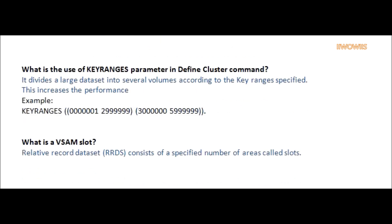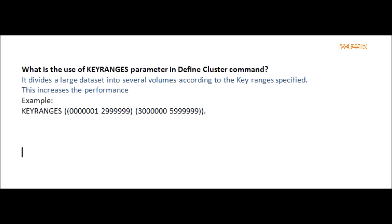Question: What is the use of the Key Ranges parameter in the Define Cluster command? Answer: It divides a large data set into several volumes according to the key ranges specified. This increases performance. Example: Key Ranges (000000001, 299999) (300000, 599999).